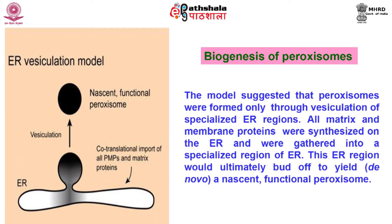There are many models suggested for biogenesis of peroxisomes. The first model is the ER vesiculation model. This model suggested that peroxisomes were formed exclusively through vesiculation of specialized ER regions. All soluble and membrane-bound protein constituents of the peroxisomes were considered to be synthesized co-translationally on the ER, then sequestered into a specialized region of ER that would form a smooth vesicle, which would expand and ultimately bud off to yield a nascent functional peroxisome.